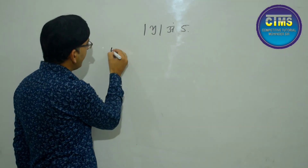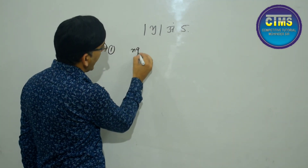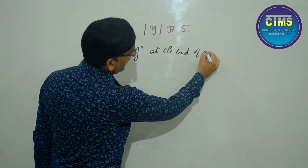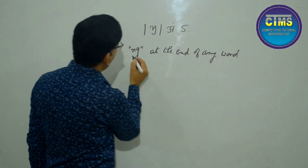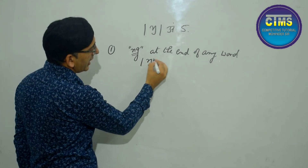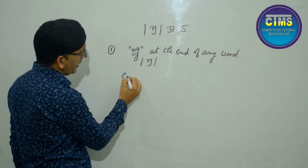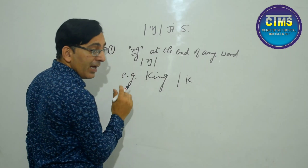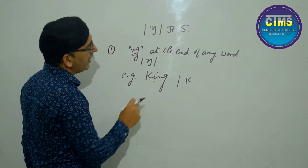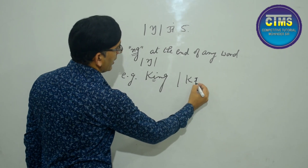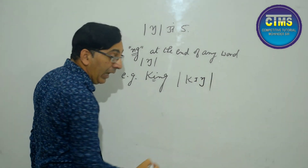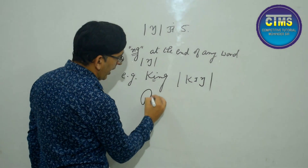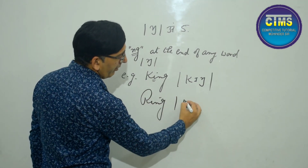Here is the first trick: in the combination 'ng', if you get the combination N-G at the end of any word, it gives the ŋ sound. For example, 'king' — it's not 'king' with a hard G, it's 'king'. Another example: 'ring' — R-I-N-G, pronounced 'ring'.